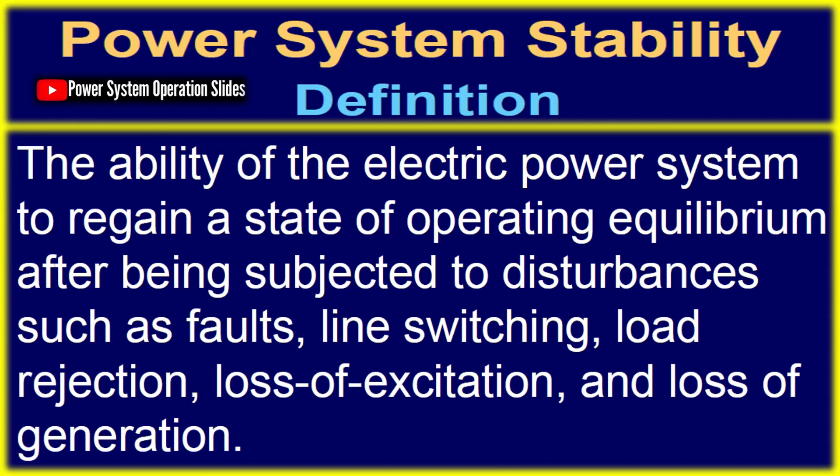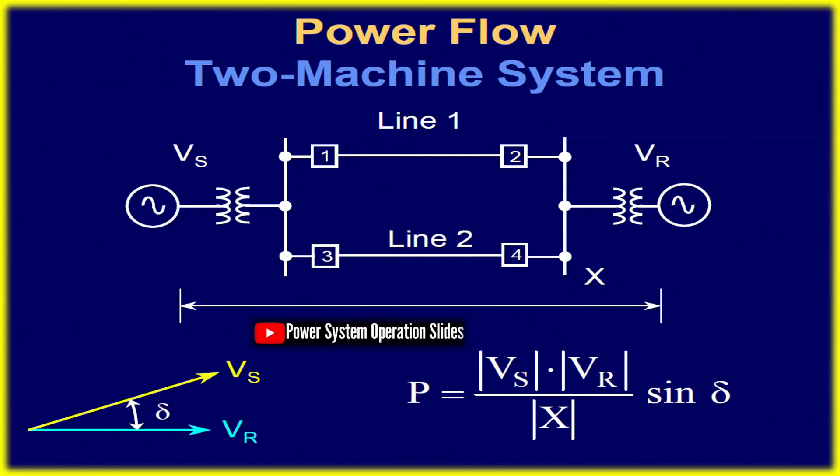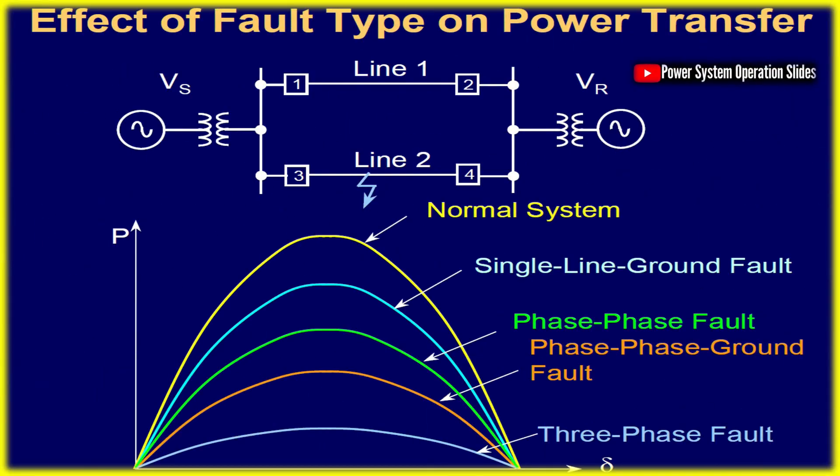OOS protection for generators became a priority following historical blackouts, including the 1965 Northeast power failure and the 2003 blackout, prompting industry groups to develop guidelines for OOS relay configurations.